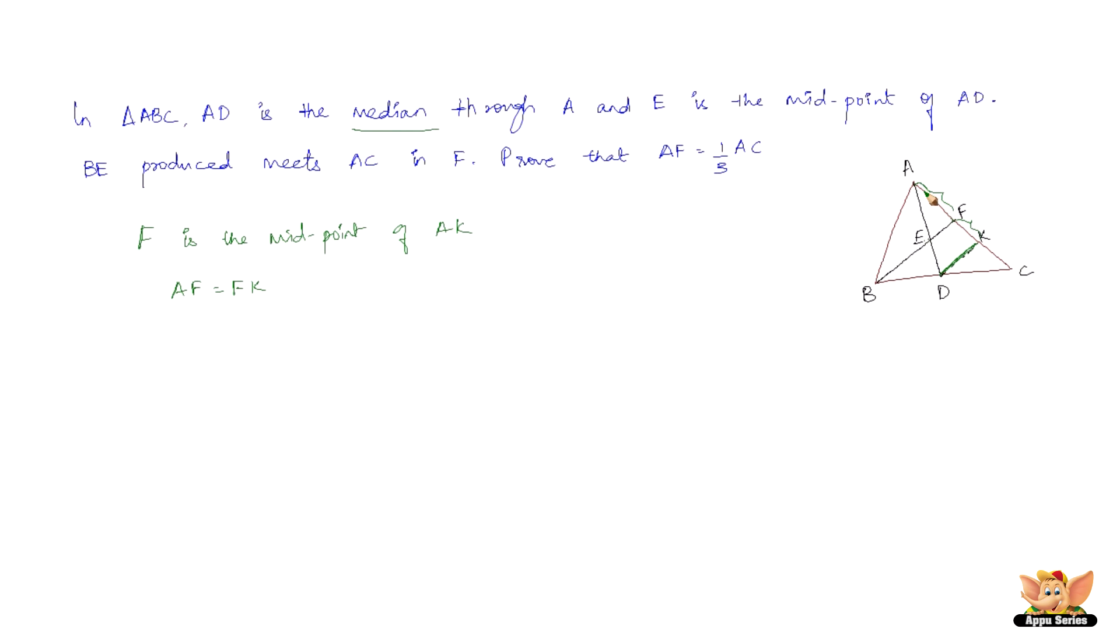Now in triangle BCF, D is the midpoint of BC and DK is parallel to BF. Therefore, K is the midpoint of FC. Again using the converse of the midpoint theorem, we have K as the midpoint of FC.